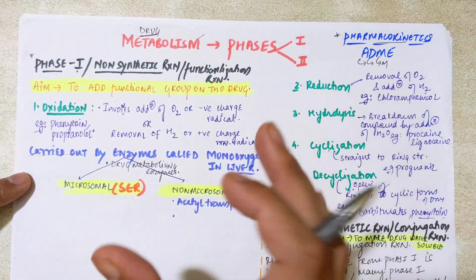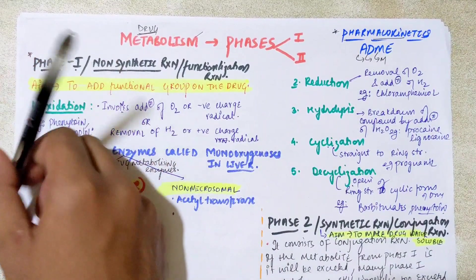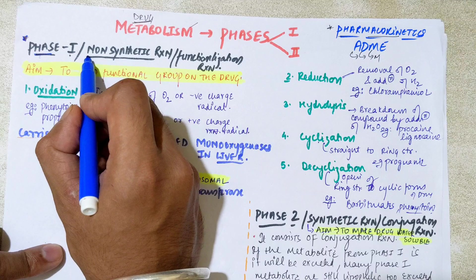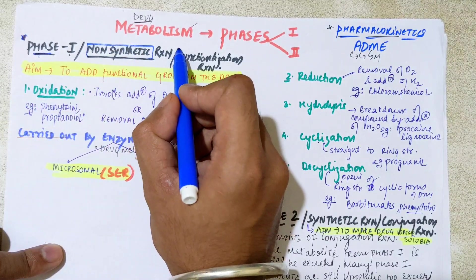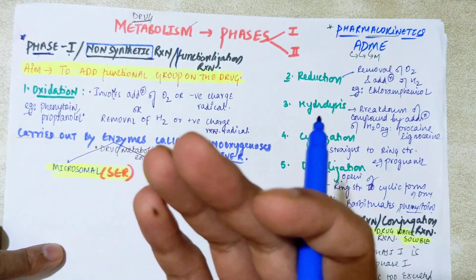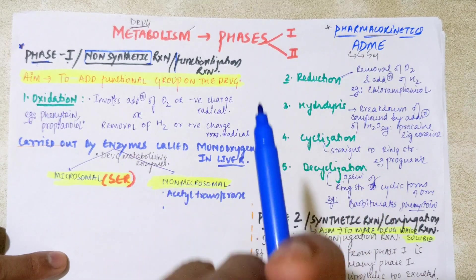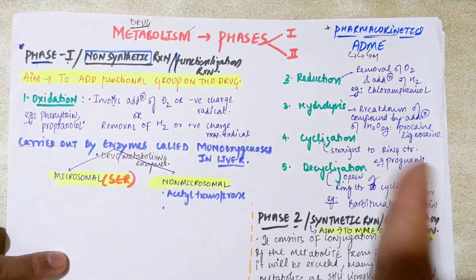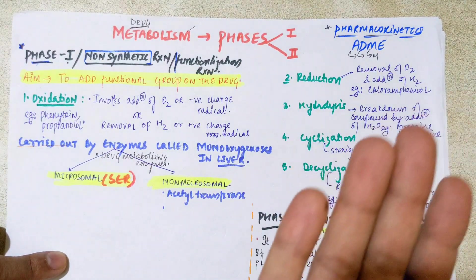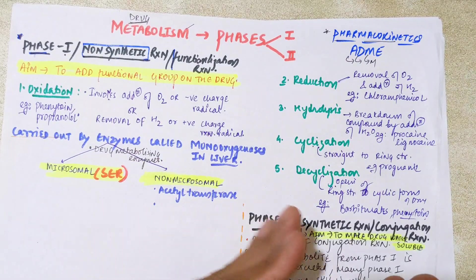We have two phases — meaning, how the metabolism is done, how the drug will be metabolized, and what processes are happening in the liver. Phase one is also called a non-synthetic reaction and a functionalization reaction, because the main aim of phase one metabolism is to add a functional group on the drug — a polar group that will make the metabolite of the drug polar so it can be easily excreted or become water-soluble.